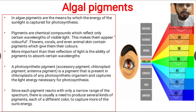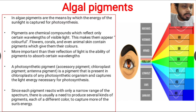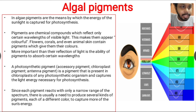Pigments are chemical compounds which reflect only certain wavelengths of visible light, and this makes them appear colorful. For example, chlorophyll is a pigment which captures sunlight at the blue range — the shorter wavelength of sunlight — and after capturing, it reflects some of the light.